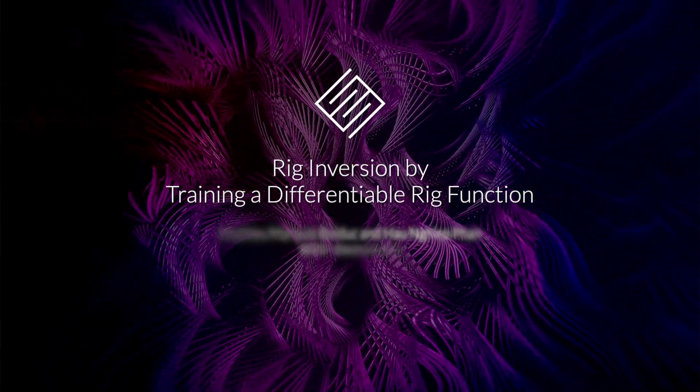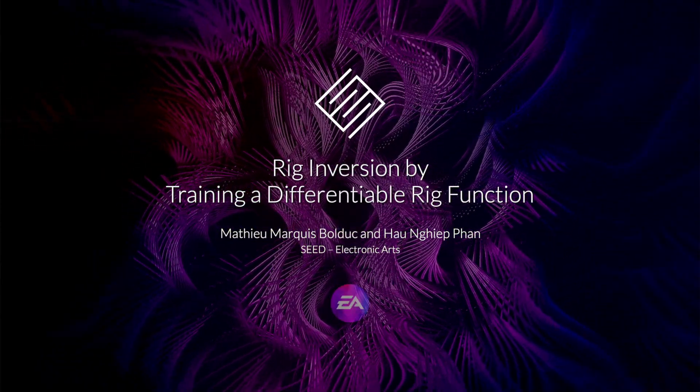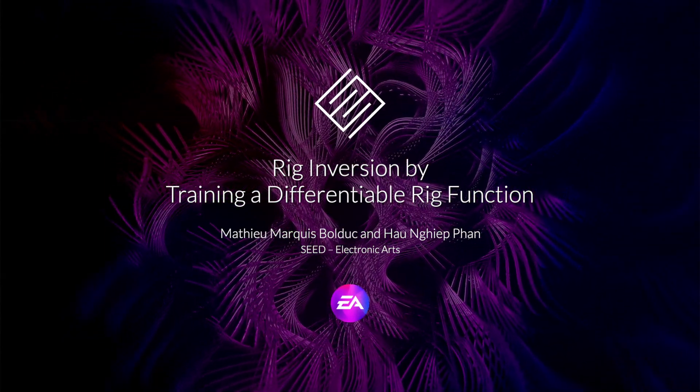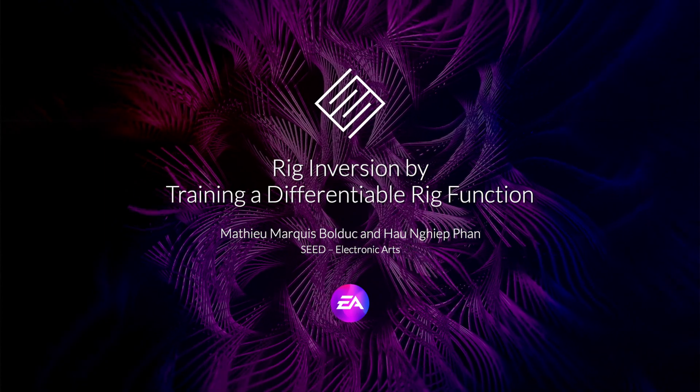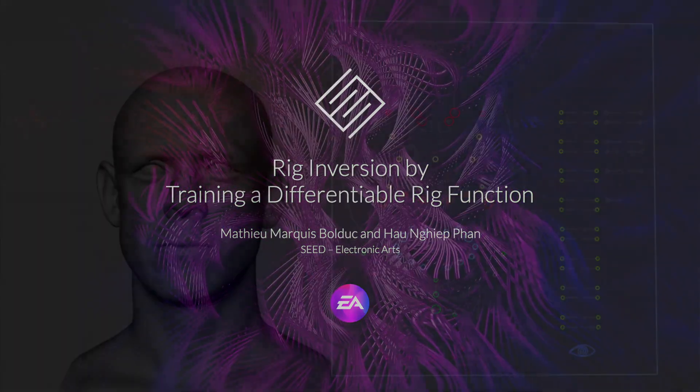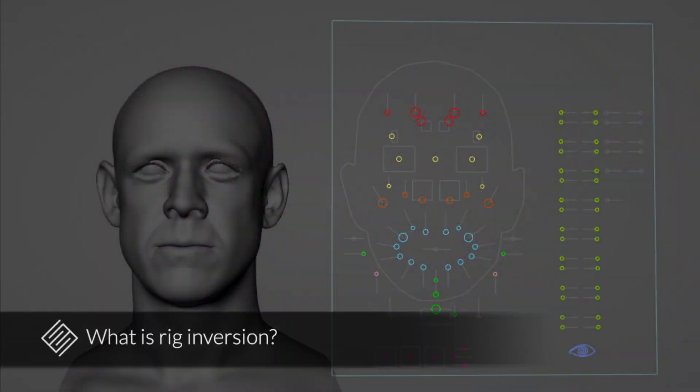Hello and thank you for watching this video where we will present a novel solution to the rig inversion problem. This work was done at SEED, which is a worldwide research and development team at Electronic Arts. What is the rig and why would we want to invert it? For the purpose of this work, the rig is a function, assumed to be a black box, that takes rig control parameters as input and produces a posed mesh as output. Varying rig control values produces a mesh animation. Rig inversion is a process of finding rig control values that best match an input mesh.